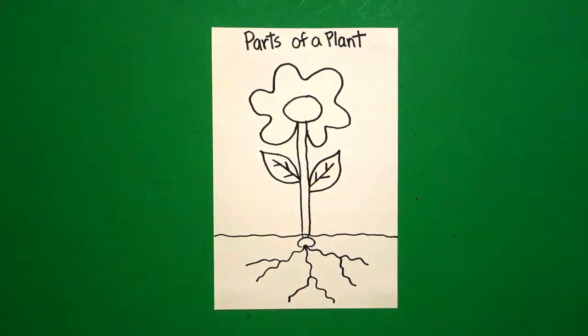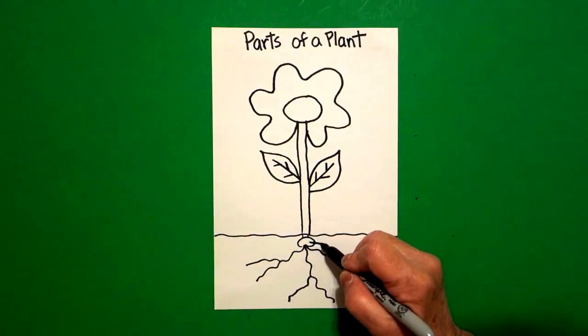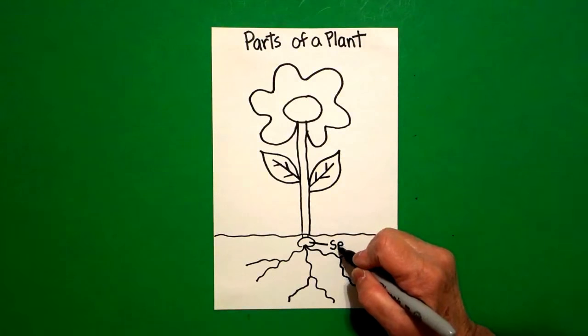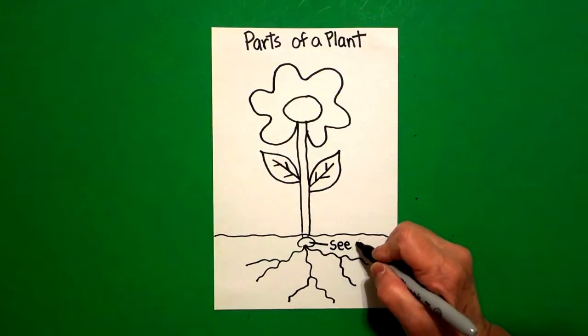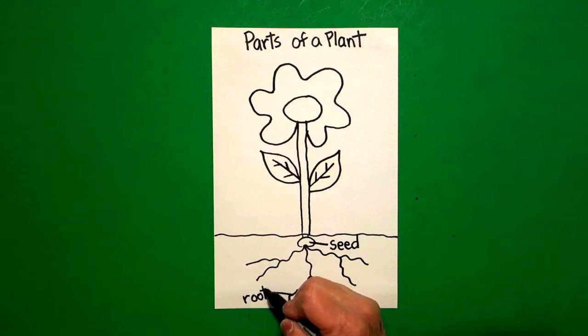Okay, starting all the way down at the bottom, right here where we started here, I'm going to draw a straight line out and then I write seed, S, E, E, D. Then I come down to this section and I draw a straight line, that straight line tells you that this is what it's labeling and I write roots, R, O, O, T, S.